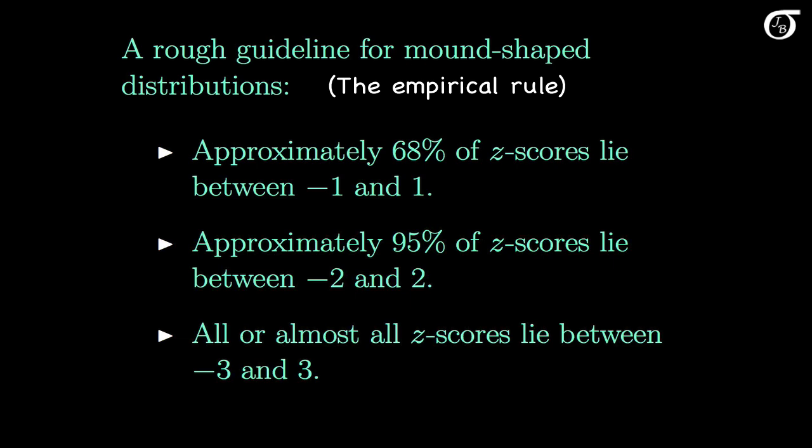Z-scores can be greater than 3 or less than minus 3, and those correspond to very large and very small observations.